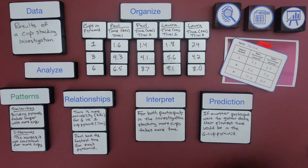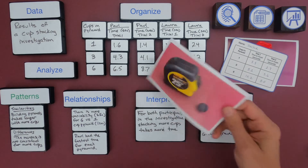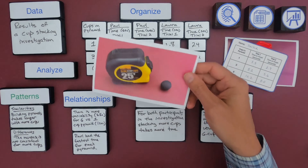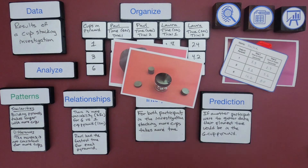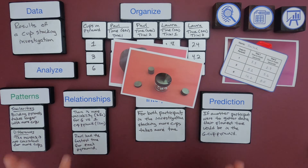Now you could look at some other data sets — a bouncing ball or magnets attracting spheres. That's how you do quantitative analysis: organize the data, look at the numbers. I hope that's helpful.